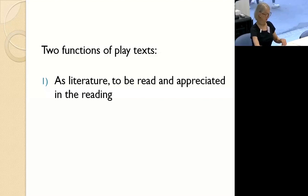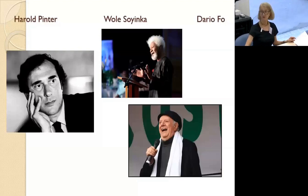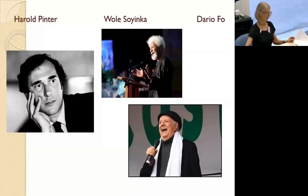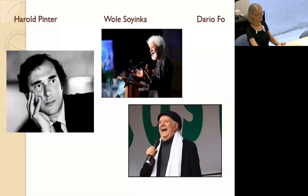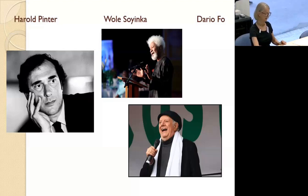Numerous playwrights have been awarded the Nobel Prize for literature, including Eugene O'Neill, Wole Soyinka, Dario Fo, and Harold Pinter. Dramatic literature as a genre is to be read and appreciated in the reading by attending to the same kinds of qualities we appreciate in other works of literature: the development of themes and theses, narrative construction, character development, and expressive uses of language.